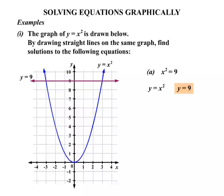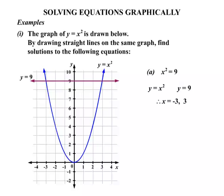When we solve the equation, we're looking at the points of intersection. It occurs at x equals minus 3 — that's one solution. The other point of intersection occurs when x equals positive 3. So two solutions: x equals minus 3, or x equals positive 3.